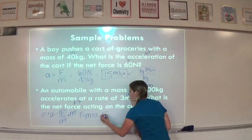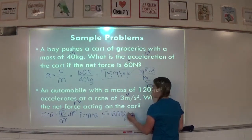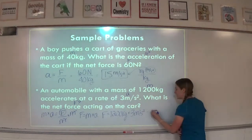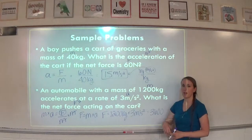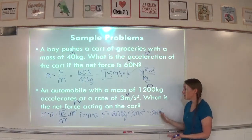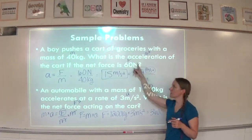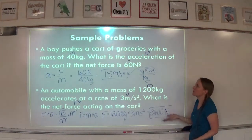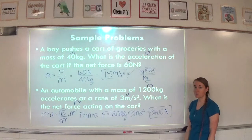1,200 times 3 is 3,600. Now for units: we have kilograms times meters per second squared. None of those cancel, so you can write kilograms times meters per second squared — or remember, a kilogram times meters per second squared is a Newton, which is our unit for force. So the answer is 3,600 Newtons. That's a little easier to remember than writing out kilograms times meters per second squared.